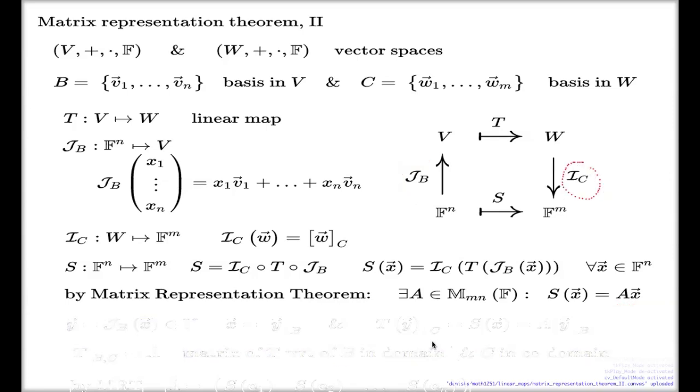If I introduce a vector y which is the image of x under the J_B mapping, so y lives in V and that's the image of some x in Fⁿ, then the coordinates of the action of T on y with respect to the C basis, which is effectively S of x, this is my matrix multiplication by A.